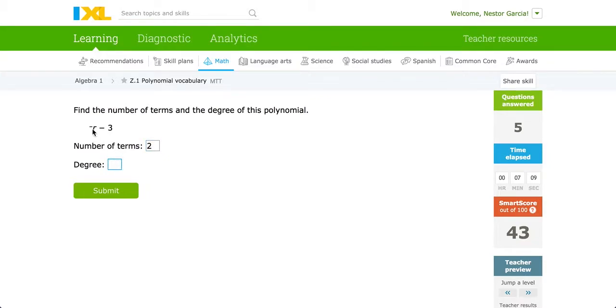What is the degree? r is the only variable here. What is the exponent of r? It's an invisible one we have there, therefore 1 is the degree.